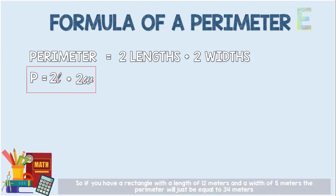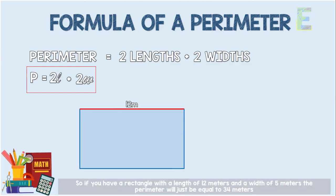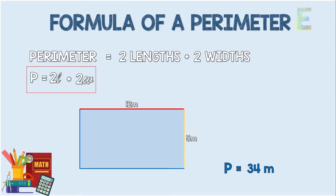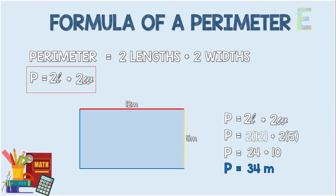So if you have a rectangle with a length of 12 meters and a width of 5 meters, the perimeter will be equal to 34 meters, since 12 times 2 plus 5 times 2 is equal to 34.